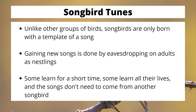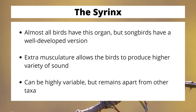The songs don't need to come from another songbird. The reason this is possible is that they have a very well-developed organ known as the syrinx. Almost all birds have this organ — it's their voice box, just like what we have. However, the extra musculature in the syrinx of songbirds allows them to produce a much higher variety of sound in different pitches and tones. This can be very variable, but it sets them apart from all other taxa. Songbirds are the king of making songs, thus their name.